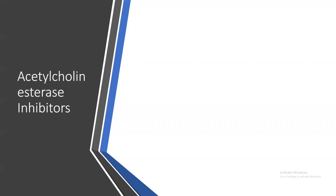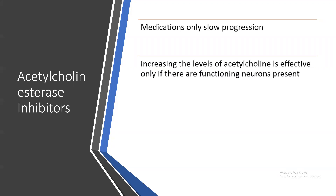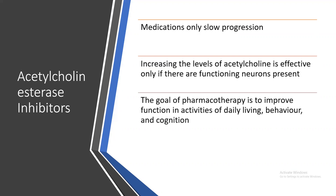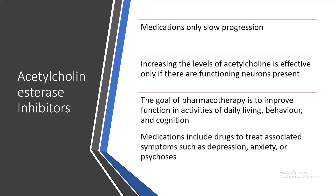Acetylcholinesterase inhibitors are used only to slow progression. Increasing acetylcholine levels is effective only if functioning neurons are present; otherwise this therapy does not work. The goal of pharmacotherapy is to improve functions, activities of daily living, behavior, and cognition. Medications also include drugs to treat associated symptoms such as depression, anxiety, and psychosis.